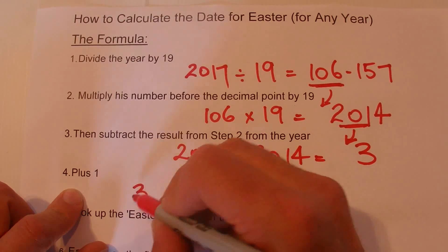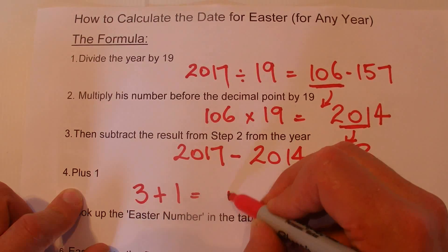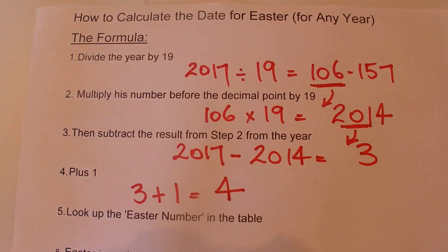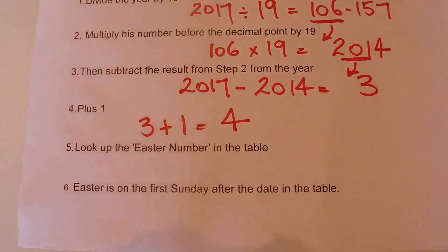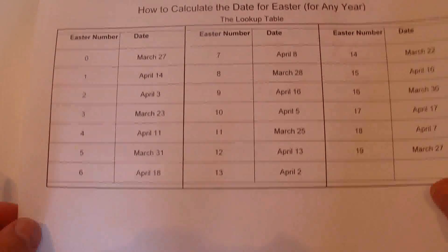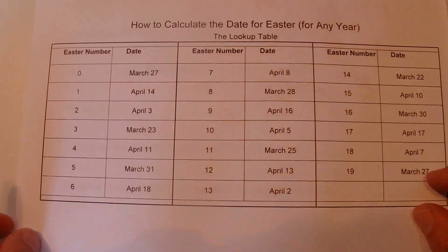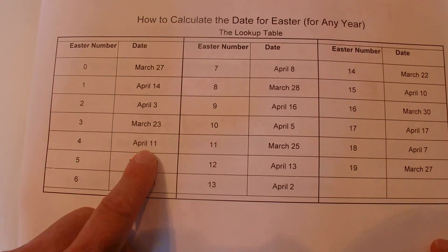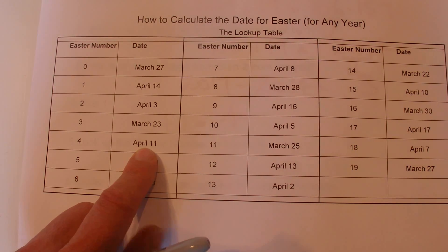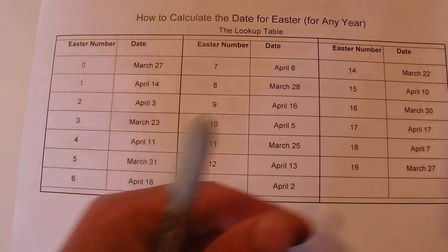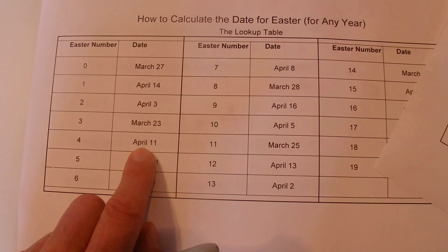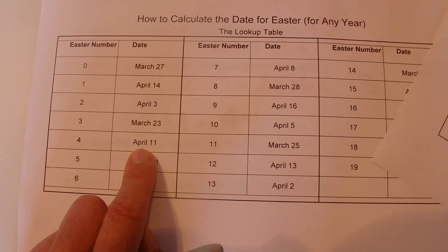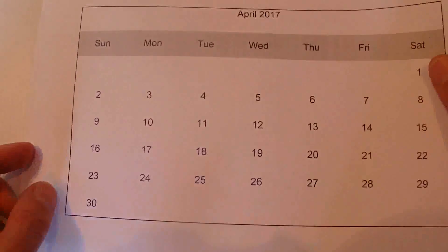Then we add 1 onto the 3, and that gives us 4. What we need to do with that 4 is look it up in this table — I'll put a copy of this table down in the description section just under this video. And 4 means we need to look for the 11th of April. The 11th of April is our key date, and then we find the Sunday after the 11th of April, and that is Easter Sunday.